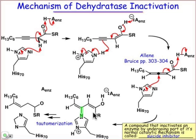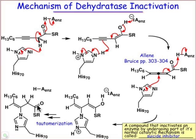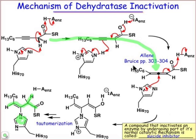That's going to undergo tautomerization so we can get rid of this enol geometry and replace it with the more stable thioester form by moving that hydrogen. Now we've basically completely shut down the enzyme through irreversible covalent binding of this substrate analog to the imidazole that is the active site side chain. Because this process follows the normal mechanism up until this point, the enzyme thinks it's doing the chemistry it should be — but in fact it converts the substrate into an active form that eventually kills it. We consider this a type of inhibitor known as a suicide inhibitor.